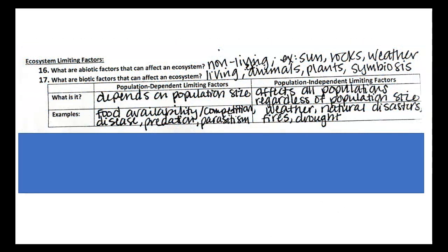So ecosystem limiting factors, we talked about abiotic factors and biotic factors. Abiotic factors are the non-living things in the ecosystem. So that would be things like the air, rocks, water.